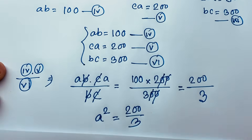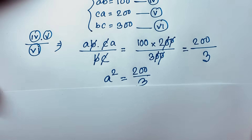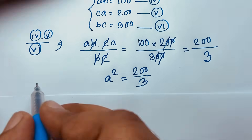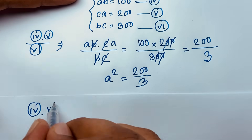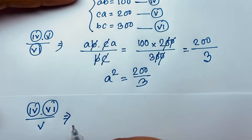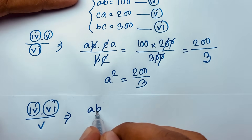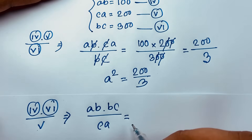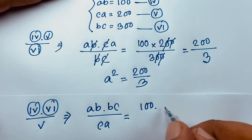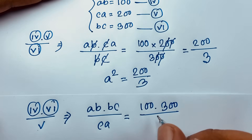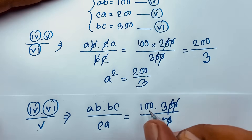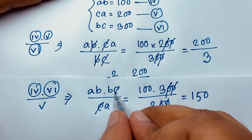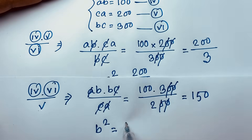Next I multiply equation 4 times equation 6 and divide by equation 5: (ab × bc) / ca = (100 × 300) / 200. The a's cancel, the c's cancel. 100 divided by 2 is 50, times 3 is 150. So b² = 150.